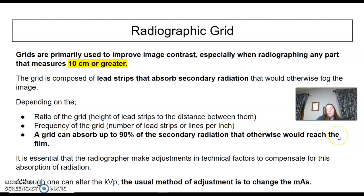What is the purpose of it? Grids are primarily used to improve image contrast and they're most often used on parts that are 10 cm or greater. The grid is made up of lead strips that absorb the secondary, which is your scatter radiation, that would otherwise make your image not as great. Depending on the ratio of the grid, which is the height of the lead strips to the distance between them, and the frequency of the grid—number of lead strips or lines per inch—the grid can absorb up to 90% of the secondary radiation that would otherwise reach your image. It's essential for the technologists to adjust those factors when they are using a grid, because your numbers grid versus non-grid will change.